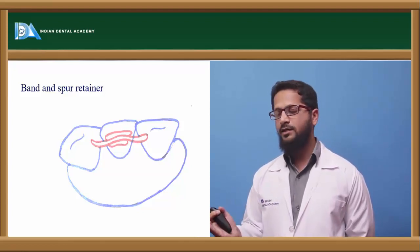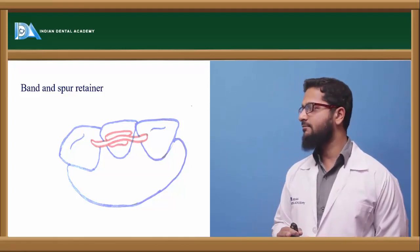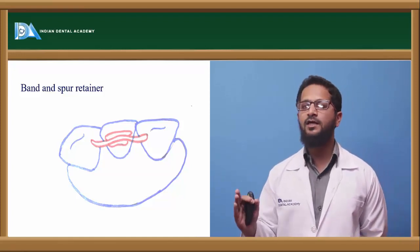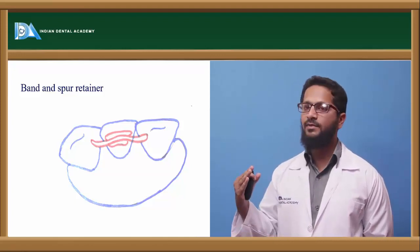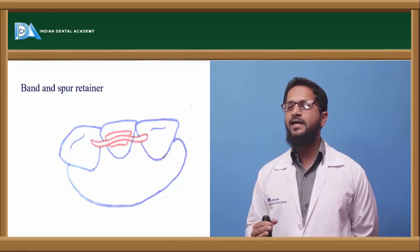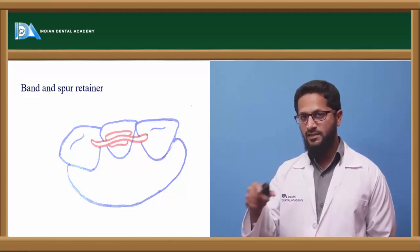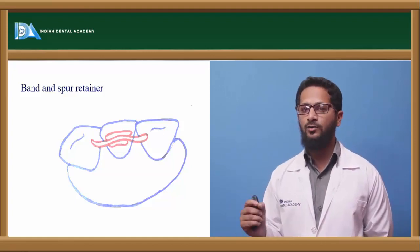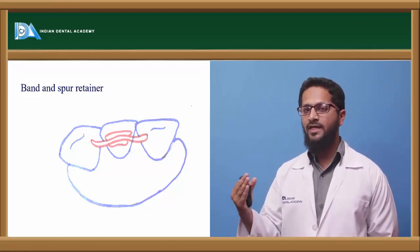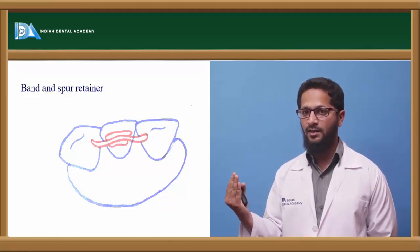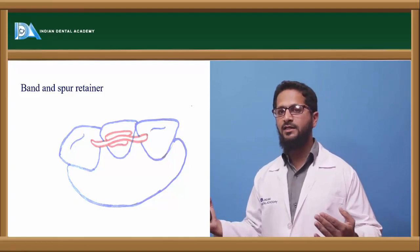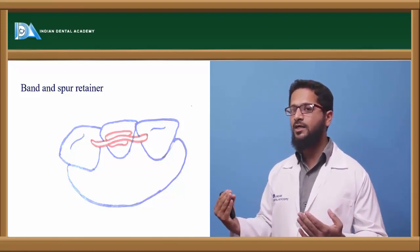The band-and-spur retainer is most commonly used after correction of palatally or buccally placed teeth and after correction of rotations. For example, if a lateral incisor was buccally placed and has been drawn back into the arch, it is banded and spurs are soldered on either side. The spurs rest on the palatal aspect of the adjacent central incisor and canine, preventing the lateral incisor from returning buccally.